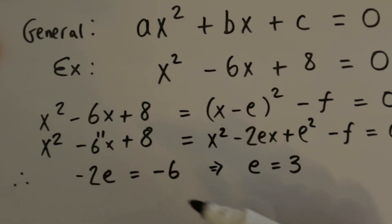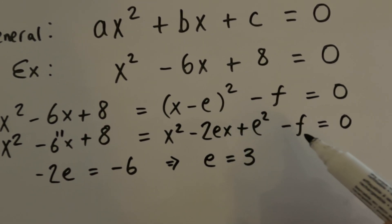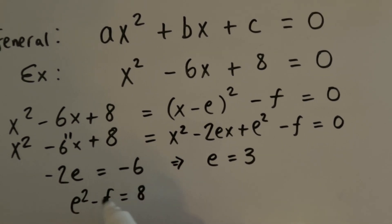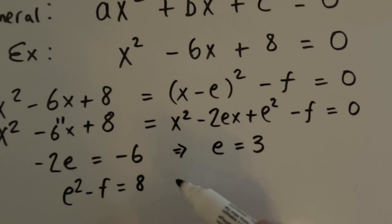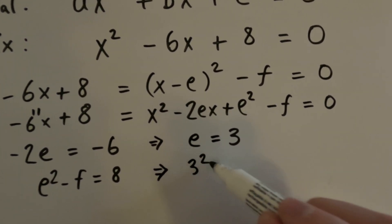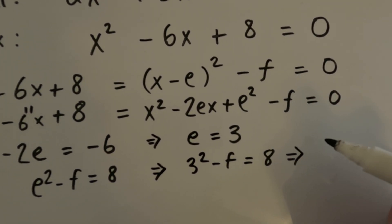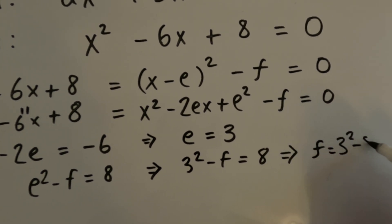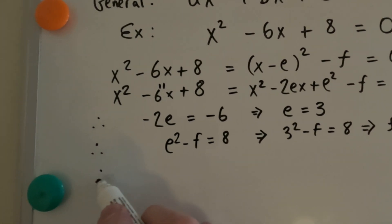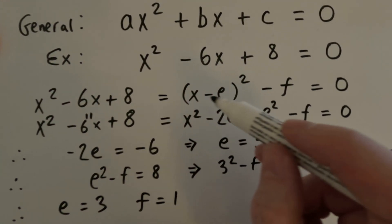And again, we just compare coefficients. So over here we have 8 as our constant term. And over here we have e squared minus f. So that means e squared minus f equals 8. And we already found e. e is 3. So therefore, 3 squared minus f equals 8. Therefore, that implies f equals 3 squared minus 8, which is 1. So f is 1. So therefore, e equals 3 and f equals 1. So now we plug those back in up here.